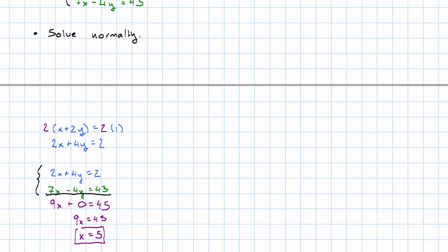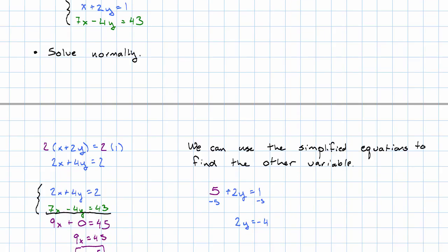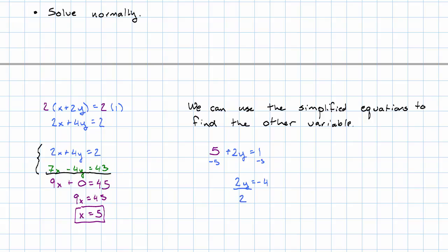Now, ordinarily, we want to go back to the original equations to find the other variable. But in this case, our original equations are so unpleasant that we can use our simplified equations to find the other variable. We got x = 5. So, in the first equation here, 5 + 2y = 1. Subtract 5 on both sides. 2y = -4. Divide both sides by 2, and we get y = -2.